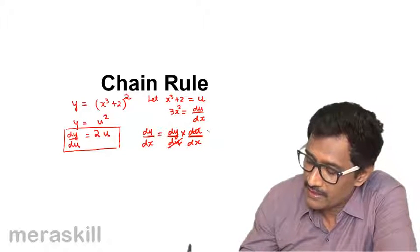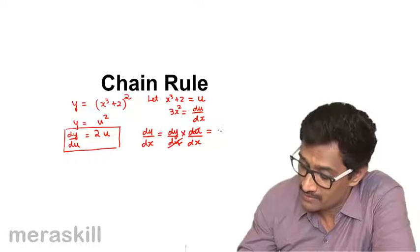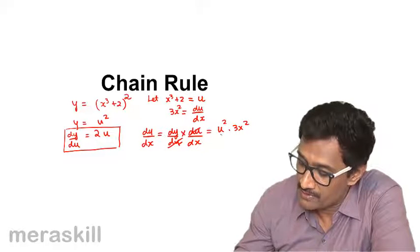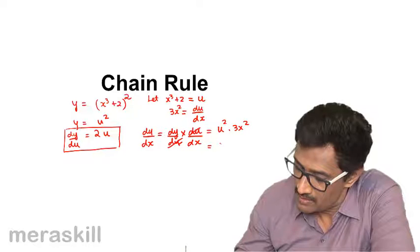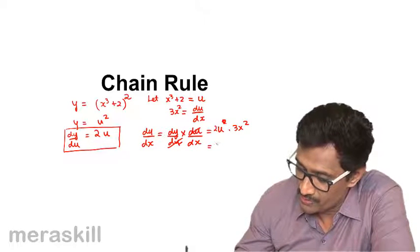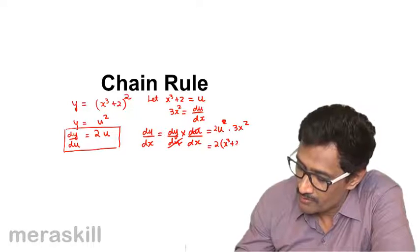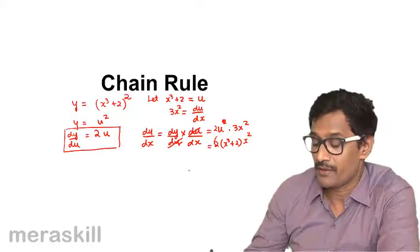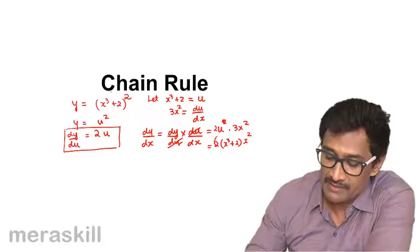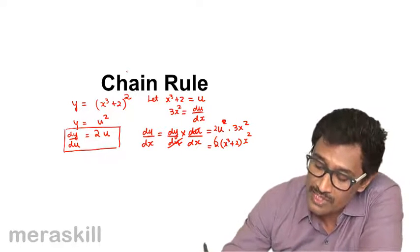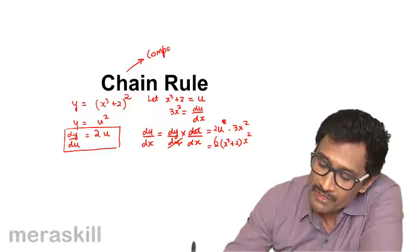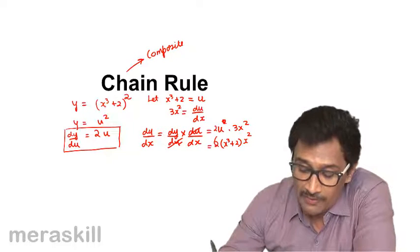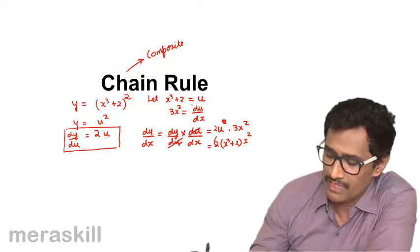So the du cancels and hence dy/dx is: dy/du was 2u, so 2u into 3x², which is 2(x³ + 2) into 3x². That gives you 6x²(x³ + 2). Chain rule is generally used for composite functions — when you have a function within a function, find the derivative of the outer function, then the inner function, and multiply the two.